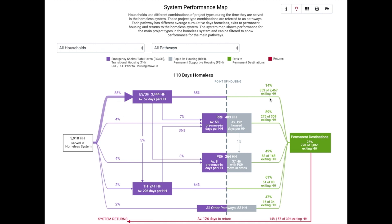I want to point out a few aspects of this overall system map that can be helpful in visualizing when people are being housed. First, let's look at the point of housing line on the map. This gray dotted line indicates the point at which people are counted as housed within the system. All households to the left of the line — those in emergency shelter, safe haven, or transitional housing — are considered homeless, while those to the right are considered housed. The boxes for rapid rehousing and permanent supportive housing are bisected by the housing line. To the left, it shows the average number of days it took for a household to be housed after enrollment. To the right, the average number of days households were housed in that project type after their move-in date. At the far right of the system map, you can see a total of 778 households had a permanent exit from the homeless system of care.